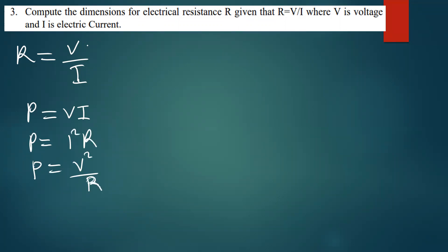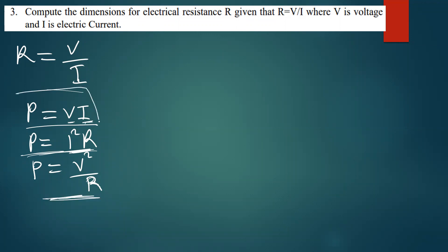We know that power is equal to VI. If you want to get the voltage, you make V the subject of the formula and replace it wherever V appears. If you make I the subject of the formula and replace it wherever I appears, you get another formula for power. I'm going to use this one — I'll make V the subject of the formula.